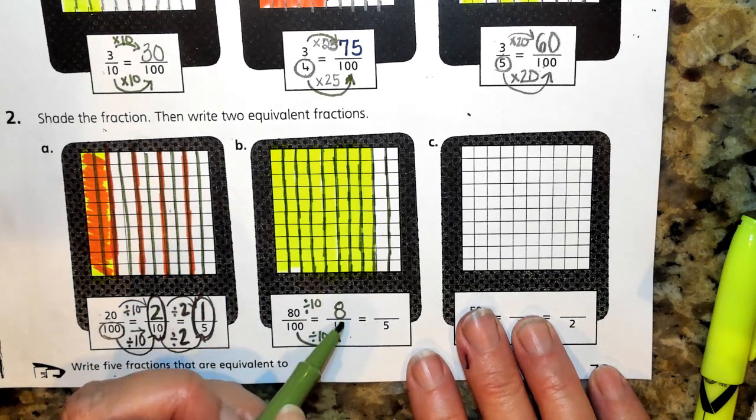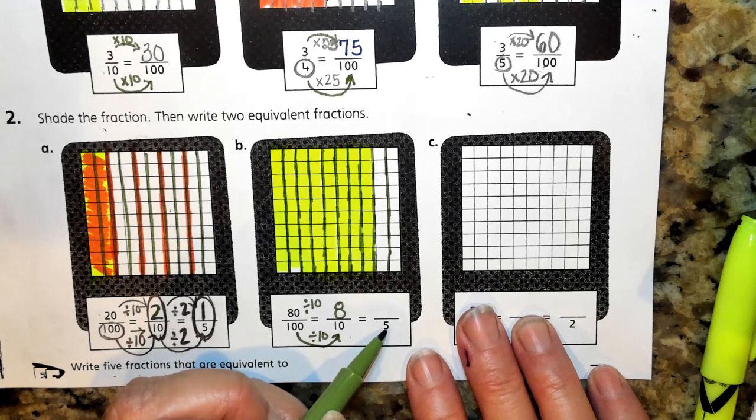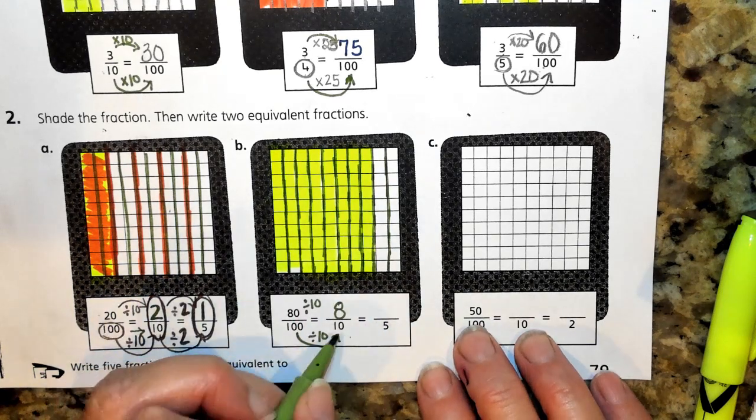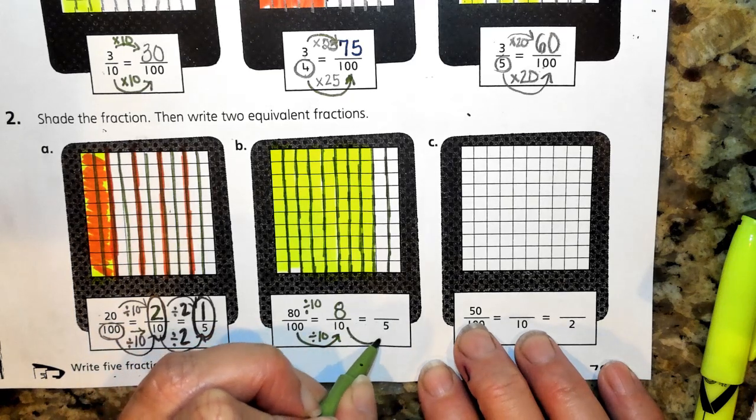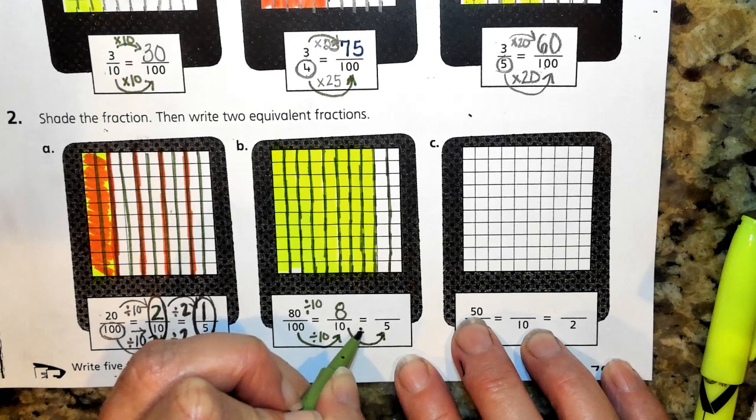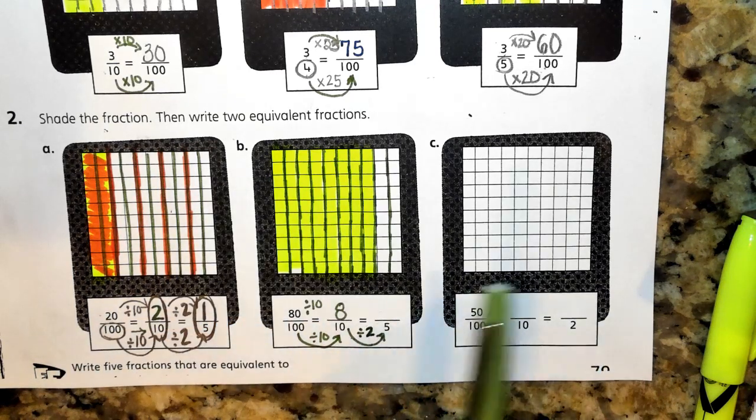And finally, we're looking at our last denominator name of 5. So we're thinking about how can we go from the number 10 to the number 5. Again, I can take 10 and cut it into 2 or divide it by 2 and I will get 5 equal parts.